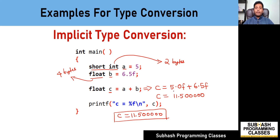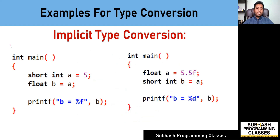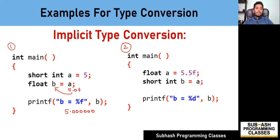Let me show you one more example where implicit type conversion happens. I have two programs on the screen — I'll call this number one and number two. In the first program, A is a variable of type short int and B is of type float. I'm trying to assign the value of A, which is of type short int, to the variable B which is of type float. Before assigning the value of A to B, the compiler will automatically convert the value five into floating point, and only then that value would get stored into the variable B. So what gets stored into B is 5.0F. When I print the value of B, I get 5.000000. Again, here before assigning the value of A to B, there is an implicit type conversion happening, which is automatically carried out by the compiler. In some programming languages, this concept of converting a smaller data type into a bigger data type is called as widening a type.